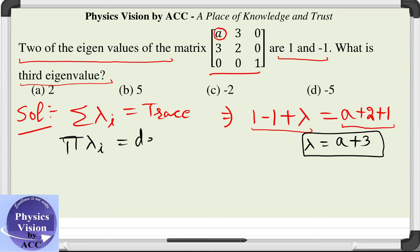Now we will make use of another property which is product of the eigenvalues is equal to the determinant of the matrix. So we will get 1 into minus 1 into lambda is equal to the determinant, which is 2a minus 9. So minus lambda is equal to 2a minus 9.